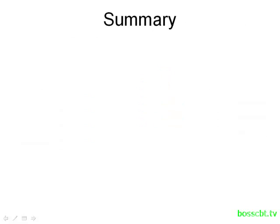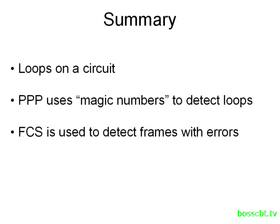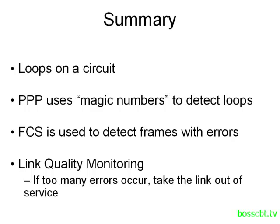To summarize: loops can happen on a circuit — sometimes intentional, sometimes not. If you don't want a loop and one comes up, your service will be interrupted. Luckily, PPP can react to loops using magic numbers: when a router sees its own magic number in LCP messages, it knows a loop must exist and will turn down that interface. PPP also uses the frame check sequence to detect errors in frames, and it can monitor the quality of a serial connection — if too many errors occur, PPP can be configured to take the link out of service, which is most useful when you have backup circuits available.